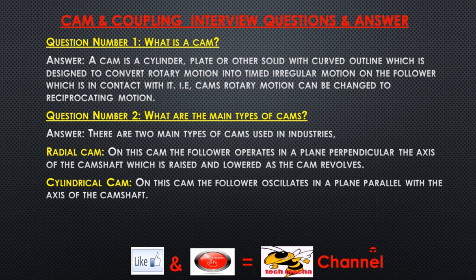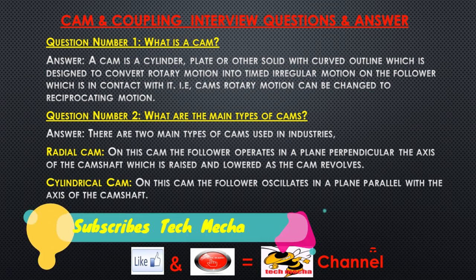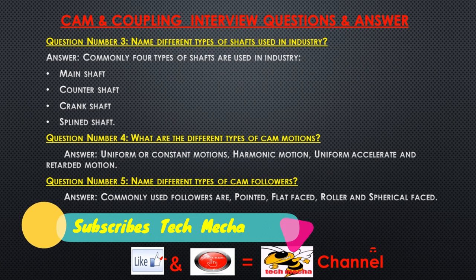Question number two: What are the main types of cams? Answer: There are two main types of cams used in industries. Radial cam: on this cam the follower operates in a plane perpendicular to the axis of the camshaft, which is raised and lowered as the cam revolves. Cylindrical cam: on this cam the follower oscillates in a plane parallel with the axis of the camshaft.